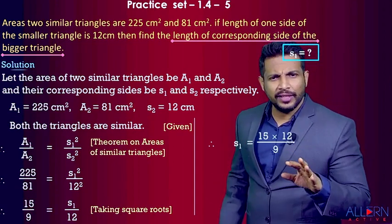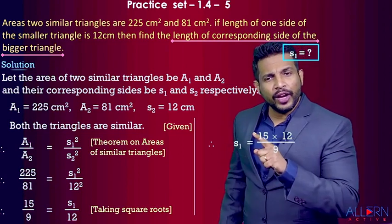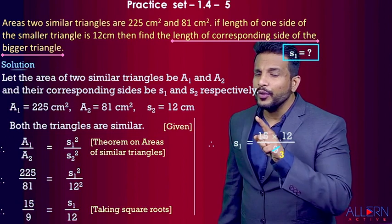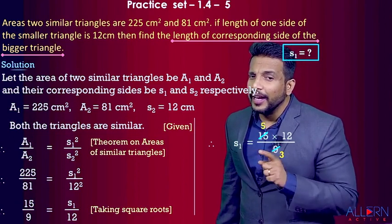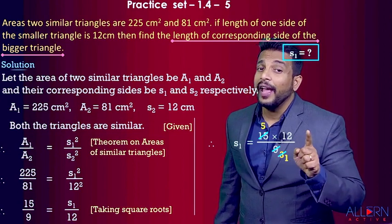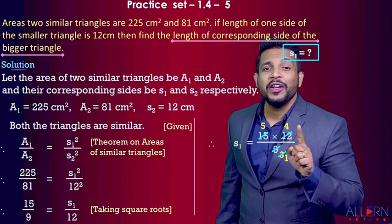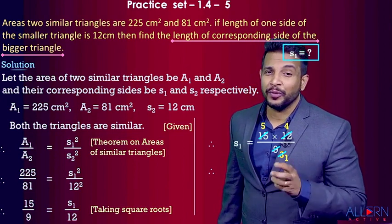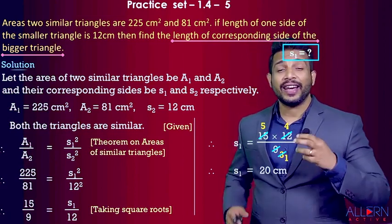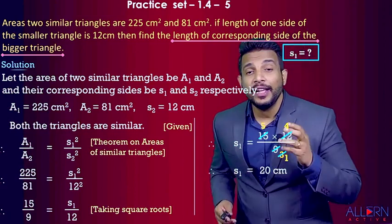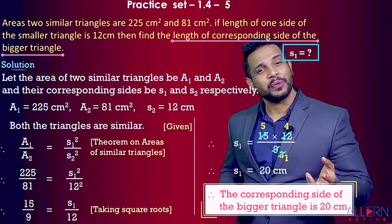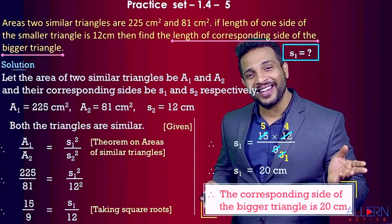Rearranging, s1 = (15 × 12) / 9. We simplify: 15 and 9 are both divisible by 3, giving 5 and 3; then 12 and 3 cancel to give 4 and 1. So s1 = 5 × 4 = 20. Hence, the length of the corresponding side of the bigger triangle is 20 cm.